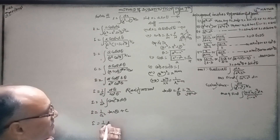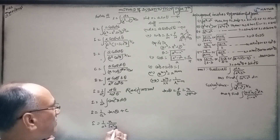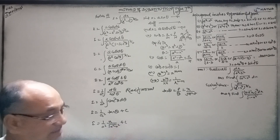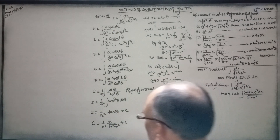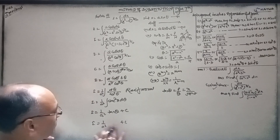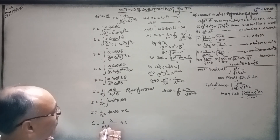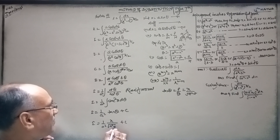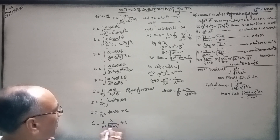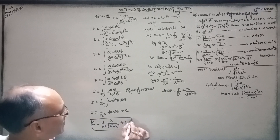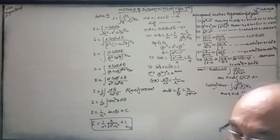So tan(θ) equals x over √(a² − x²). Therefore, I equals x divided by (a²·√(a² − x²)), plus constant. This is the answer to this question, and the fourth problem is next.